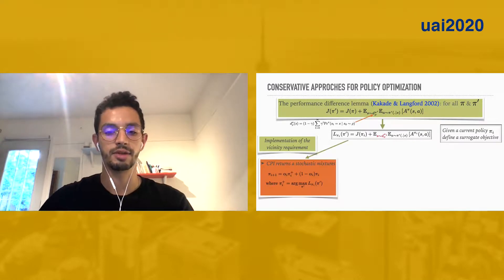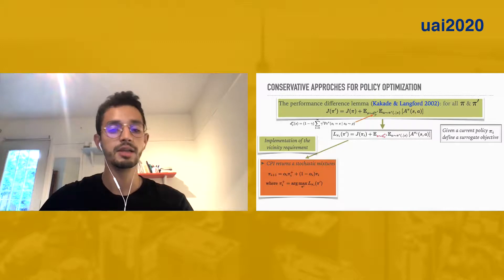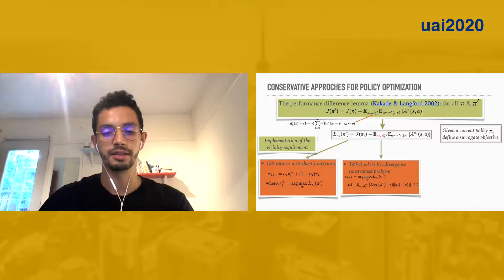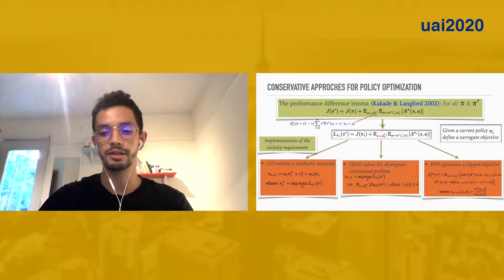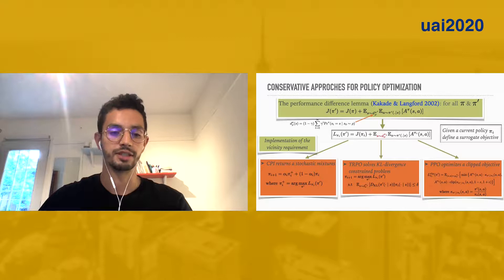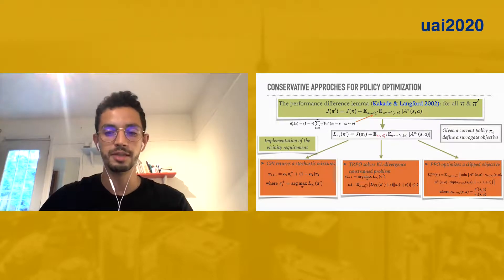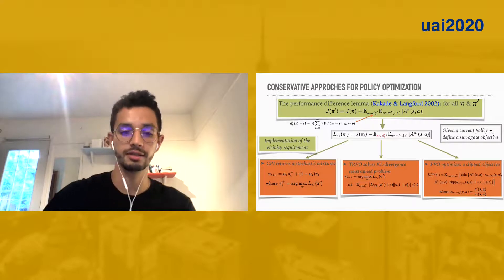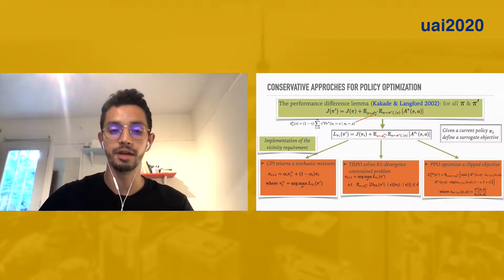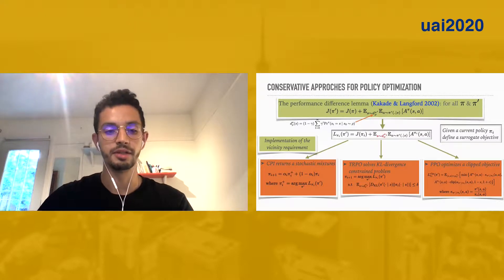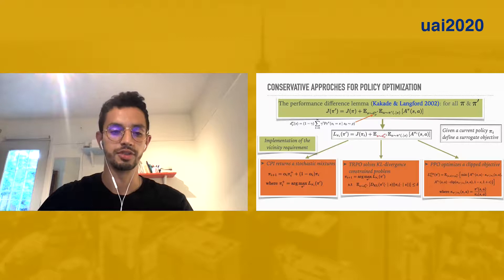This requirement is implemented in different ways. For example, CPI returns a stochastic mixture between the gradient policy and the current policy. TRPO solves the KL divergence constraint problem. And finally, PPO optimizes a clipped objective. But you can see that all these methods define closeness between policies only in terms of the immediate action probabilities. In this work, we argue that this could be a suboptimal approximation, and we should rather reason about the long-term effect of policies on the distribution of future states.